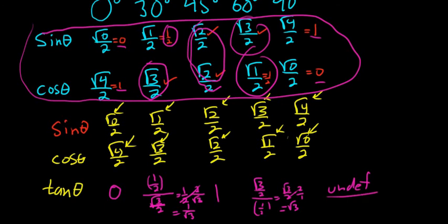And then 1 over 0, that's undefined. So tangent's not as fun as the other ones. For tangent, you just divide the sine over the cosine. So again, main idea: 0, 1, 2, 3, 4, then 4, 3, 2, 1, 0. Hope that made sense.